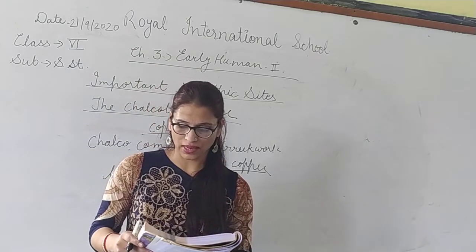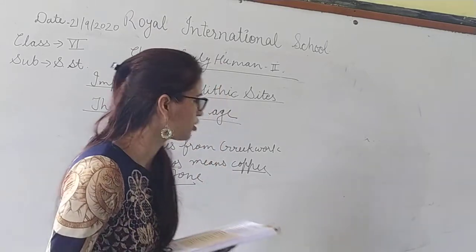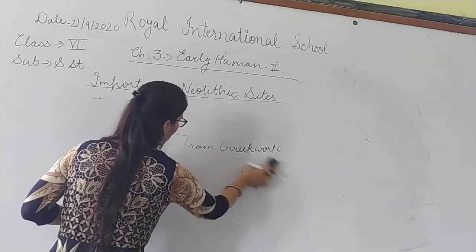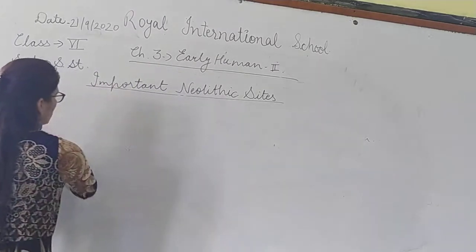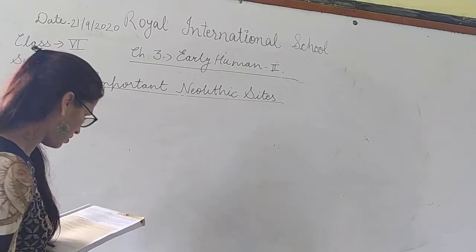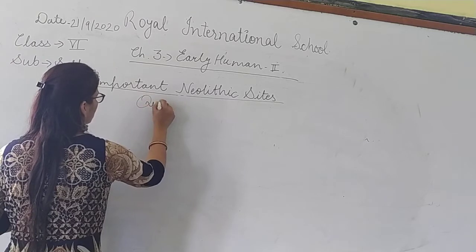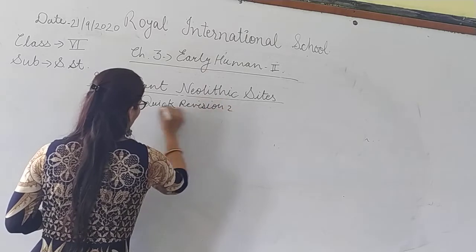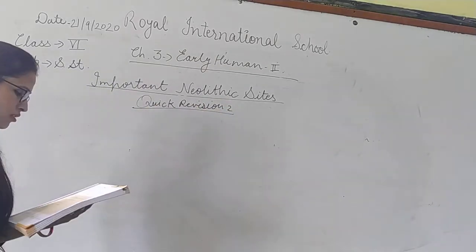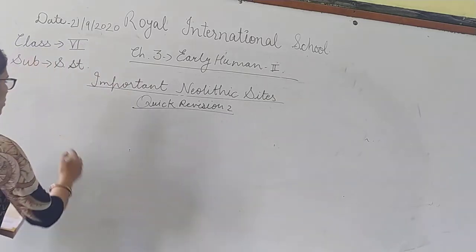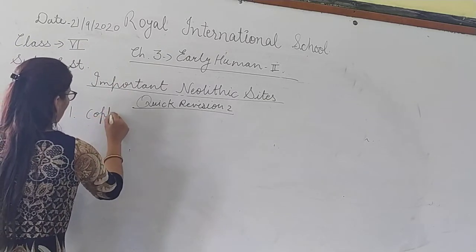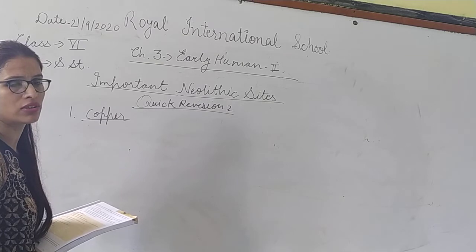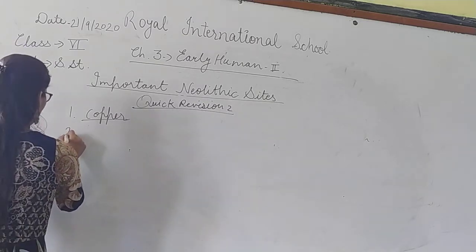Now Quick Revision 2: the Chalcolithic age can be called the Copper Stone Age because in this period, early humans used both stone and copper in making tools. Question 1: the Chalcolithic age started when men started using copper — answer: copper.